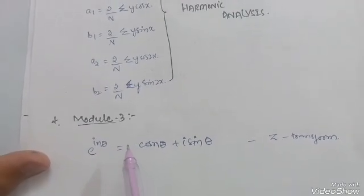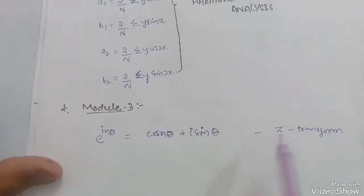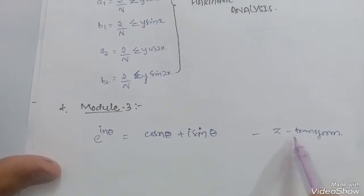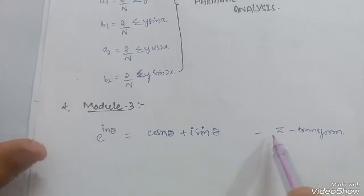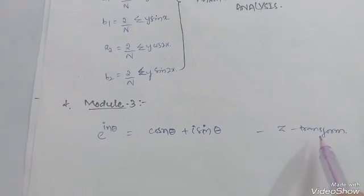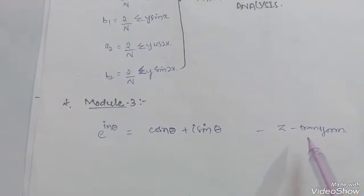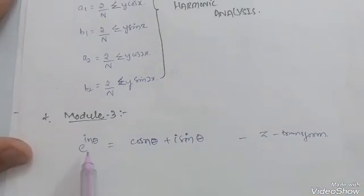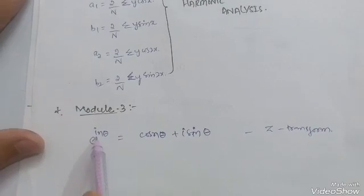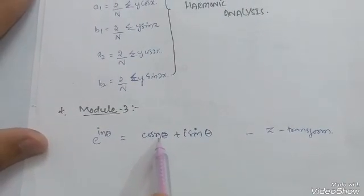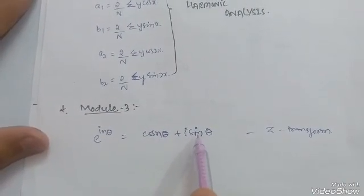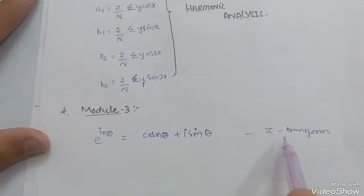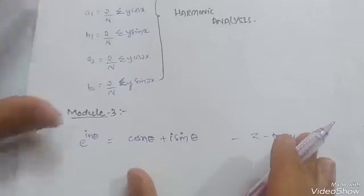In Module 3, if you are looking for passing marks, the most important topic is the Z-transform. They will ask you to find the Z-transform of expressions like cos(nθ) or sin(nθ). The key formula to remember is: e^(inθ) = cos(nθ) + i·sin(θ), which is used throughout this concept.